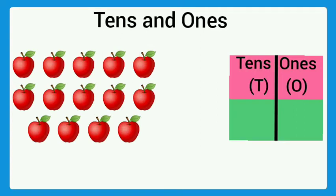How many apples are here? 1, 2, 3, 4, 5, 6, 7, 8, 9, 10, 11, 12, 13, and 14. Here are 14 apples.